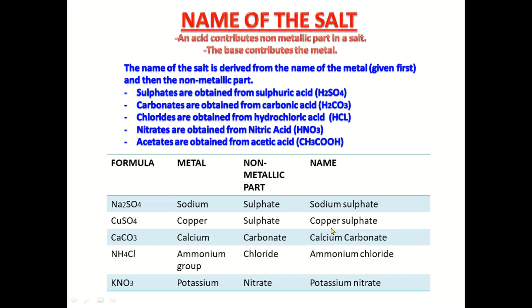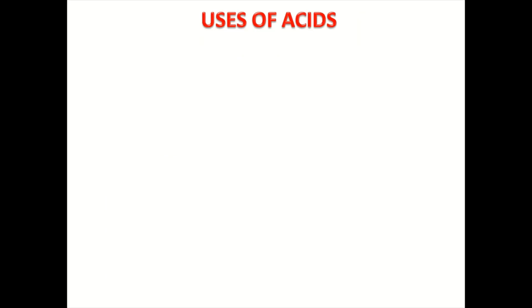In case of copper sulfate, copper is the metallic part and sulfate is the non-metallic part. Calcium carbonate: calcium is the metallic part, non-metallic part is carbonate. Ammonium chloride: ammonium is not a metal, it is a group — ammonium group and chloride. Potassium nitrate: potassium is a metal and nitrate is the non-metallic part.